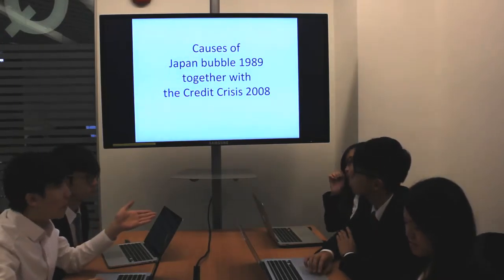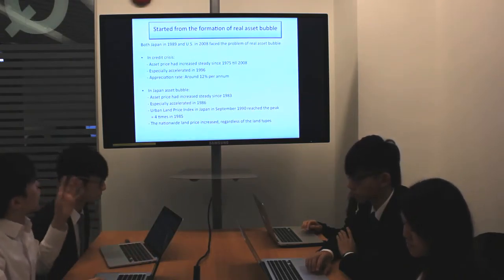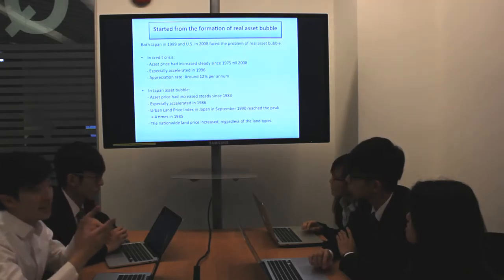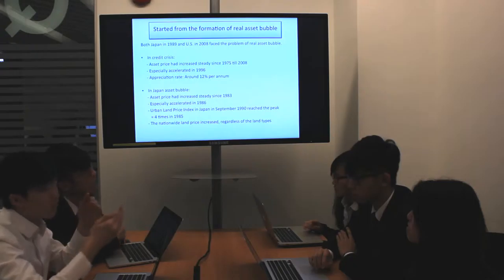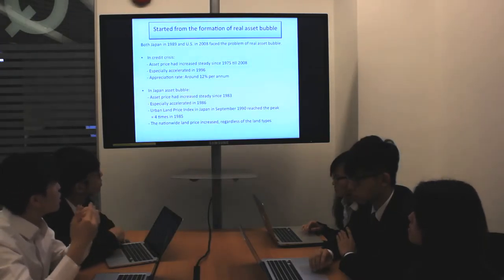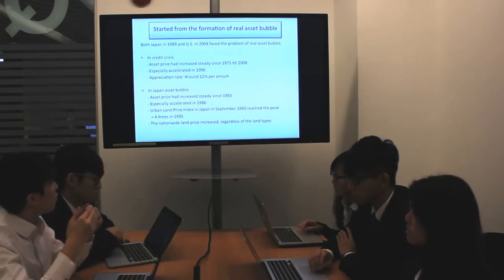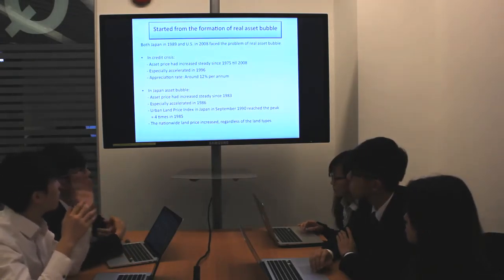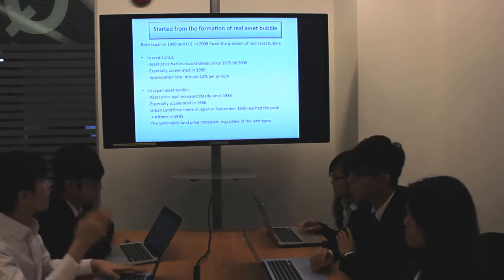Before we go into the causes of the Japan bubble, we want to start from the affirmation of the real asset bubble first. In the credit crisis happening in the U.S., the asset prices increased steadily since 1975 to 2008, especially accelerated in 1996, with an appreciation rate around 12% per annum. For Japan, the asset prices have increased steadily since 1983, especially accelerated in 1986, and the urban land price index reached its peak in 1990, which is 4 times the level in 1985.